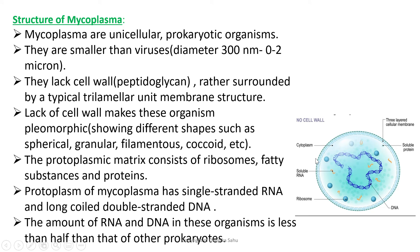Mycoplasma are unicellular prokaryotic organisms smaller than bacteria. They have a diameter of 300 nanometers to 0.02 microns. They lack a cell wall and the peptidoglycan coat, and are instead surrounded by a typical trilamellar unit membrane. The lack of a cell wall makes this organism pleomorphic — they can show different shapes such as spherical, granular, filamentous, and coccoid. The protoplasmic matrix consists of ribosomes, fatty substances, and proteins.